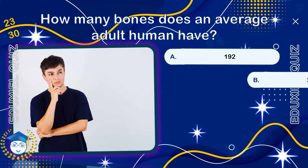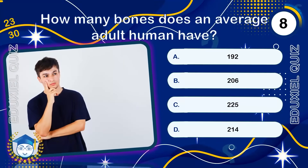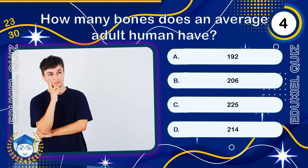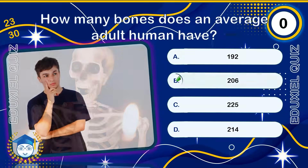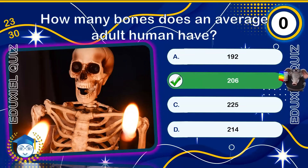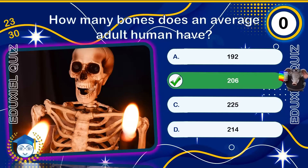How many bones does an average adult human have? The adult human skeleton typically contains 206 bones. At birth there are around 270 bones, but many fuse as a child grows. Bones not only provide structure but also store minerals like calcium and produce blood cells in the marrow.